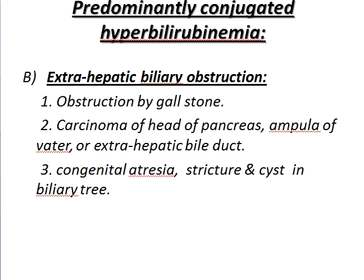Predominantly conjugated hyperbilirubinemia. Extra-hepatic biliary obstruction — obstruction outside the liver. Number one: obstruction by gallstone. Number two: carcinoma of the head of pancreas, ampulla of Vater, or extra-hepatic bile duct. Number three: congenital atresia, strictures and cysts in the biliary tree.